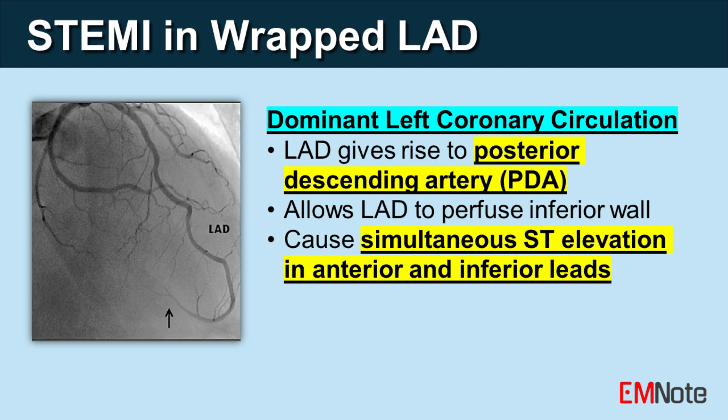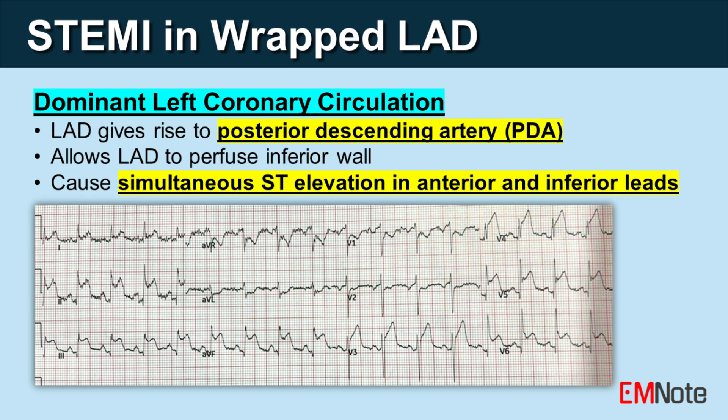Dominant coronary circulation: In a dominant left coronary system, the LAD gives rise to the posterior descending artery. This anatomical configuration allows the LAD to perfuse the inferior wall, leading to inferior STEMI changes on the ECG when occluded. LAD occlusion can cause simultaneous ST elevation in both anterior and inferior leads in patients with a wrapped LAD.